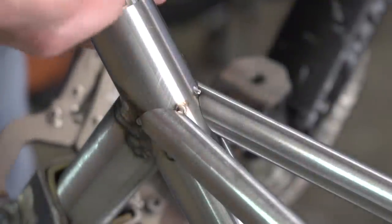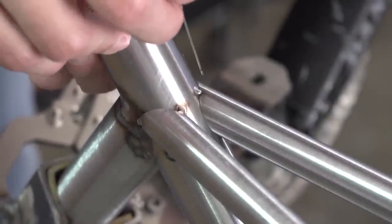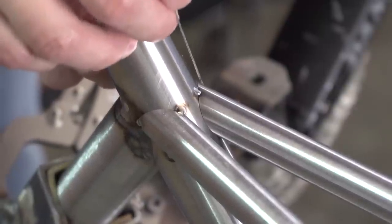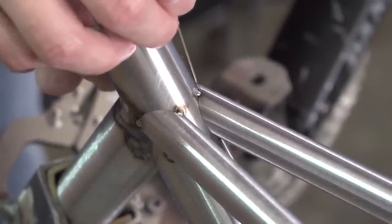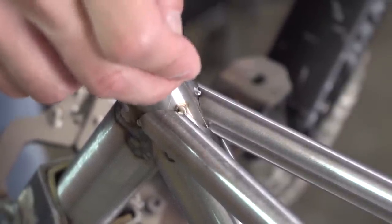I'm gonna start with the hardest weld which is the seat tube and the seat stays. So I'm gonna start right around here and then work my way down and get as far down into here.